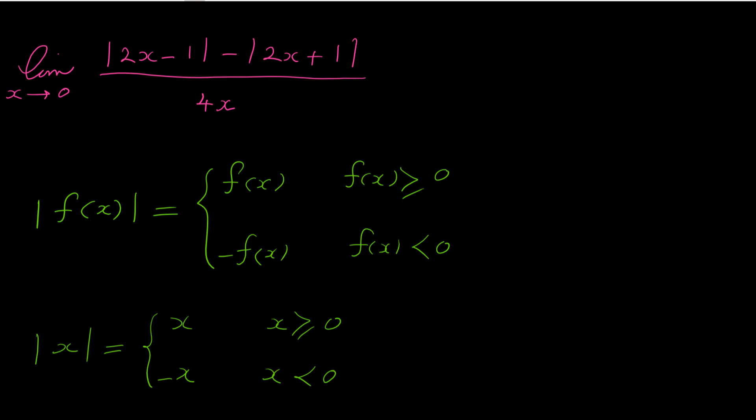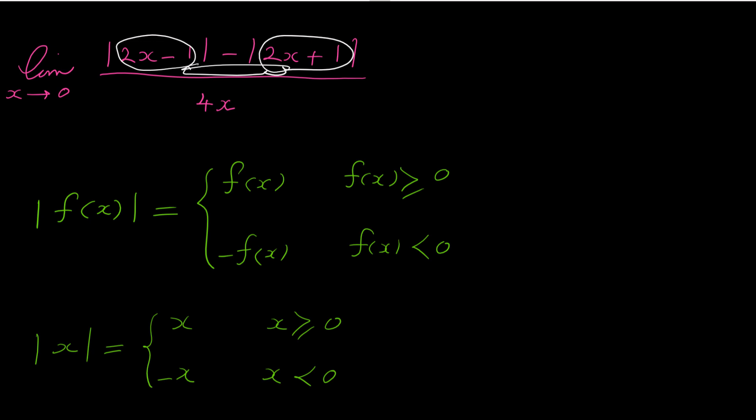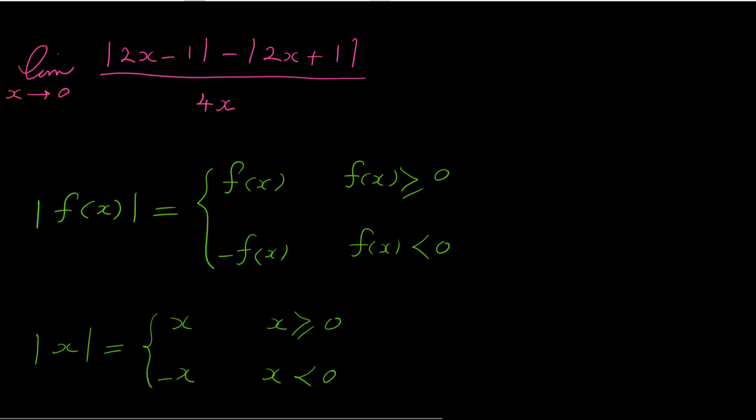Here we have 2x minus 1 and 2x plus 1 inside the absolutes. We have to see whether the inside of the absolute is positive or negative when x approaches 0. When x is a number close to 0, note that 2x minus 1 is less than 0. This is very important: if x is close enough to 0, then 2x minus 1 is less than 0.